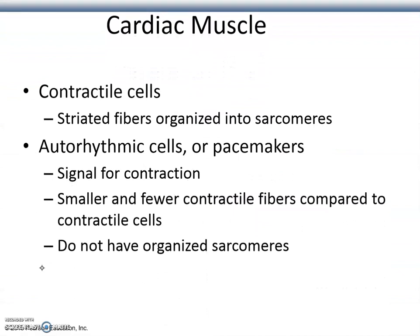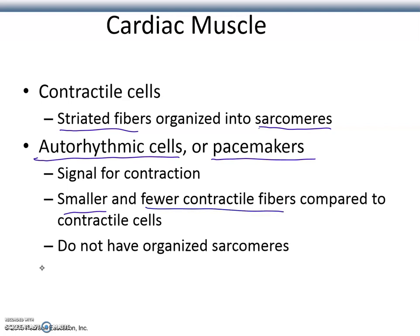The cardiac muscle has contractile cells that resemble skeletal muscle, except they are not under voluntary control — they are under control of the autonomic nervous system. The contractile cells are striated fibers organized into sarcomeres, similar to skeletal muscle. We also have auto-rhythmic cells, or pacemaker cells, that send periodic signals for contraction. They approach threshold voltage on a rhythmic basis and send a signal that travels throughout the myocardium and triggers the next contraction.